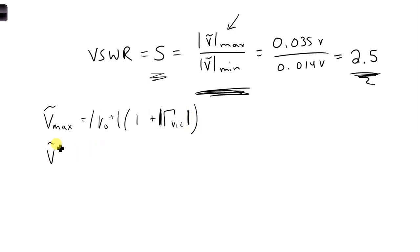And then similarly for Vmin, we can write V naught plus 1 minus, because for Vmin, the phasors are anti-parallel. So we subtract the two, pointing in opposite directions.